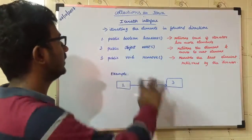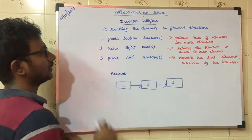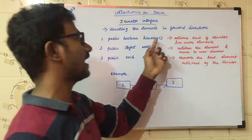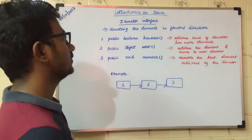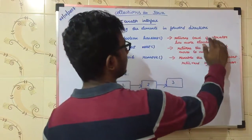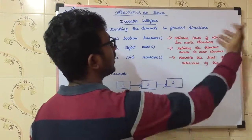There are many abstract methods in the Iterator interface. Public boolean hasNext - it returns true if the iterator has more elements.